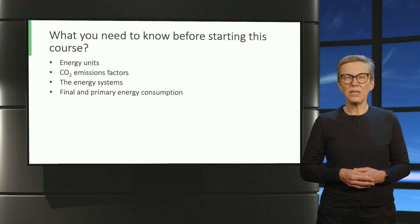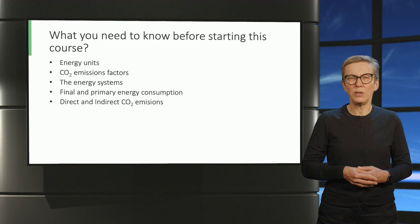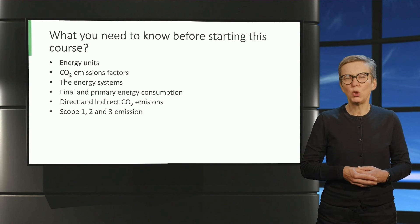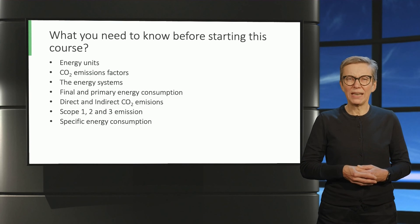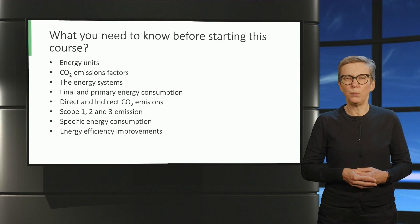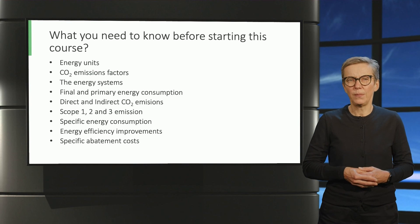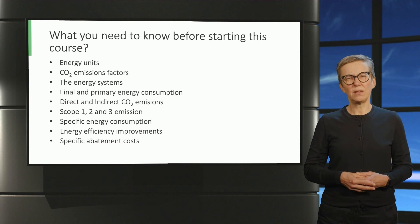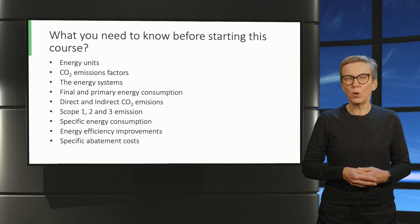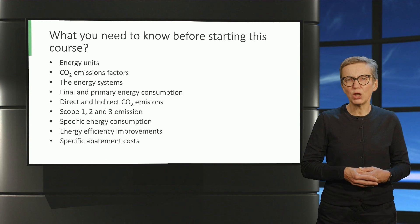You furthermore need to know what indirect and direct CO2 emissions are, and need to be able to explain scope 1, 2 and 3 emissions. You furthermore need to know how specific energy consumption is defined and how this relates to efficiency improvements. Finally, you need to be familiar with the concept of specific abatement cost. If you are not familiar with these concepts and terminology, or if you want to refresh your memory, please watch the videos from the introductory course.